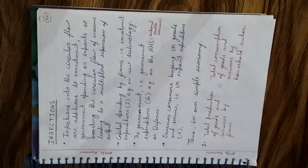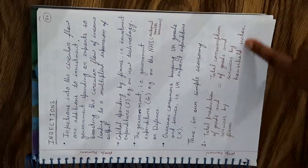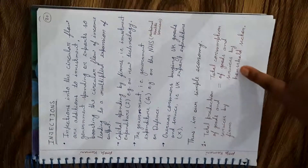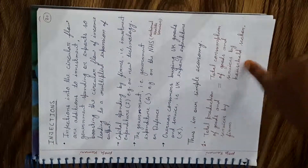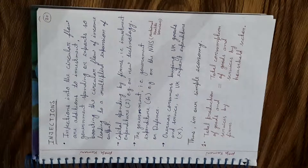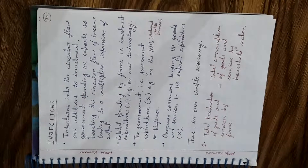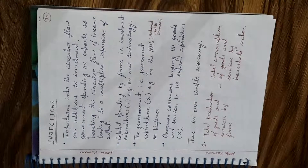The total supply of goods and services by firms should be equal to the total consumption of goods and services by the household sector. This is common sense: if a firm has produced 100 units, they will sell 100 units in the market and households will consume 100 units. So production and consumption should be equal.